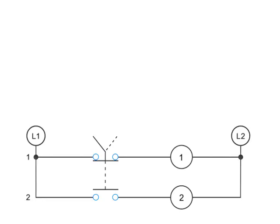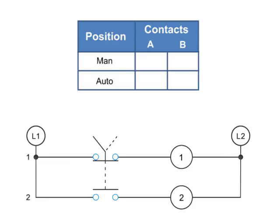Contact position on a selector switch can easily be illustrated using truth tables. This truth table illustrates the manual or automatic contact positions of a two-contact selector switch. Each contact on the line diagram is marked A or B. The positions of the selector switch are marked MAN for manual or AUTO for automatic. The truth table can be used to easily interpret what contacts are closed for a particular position.